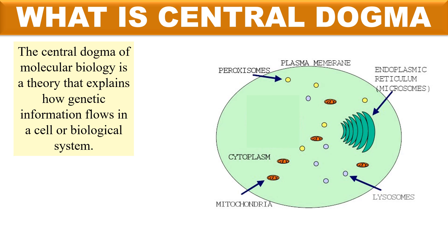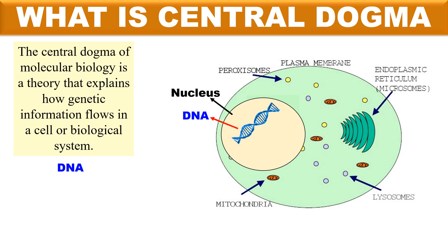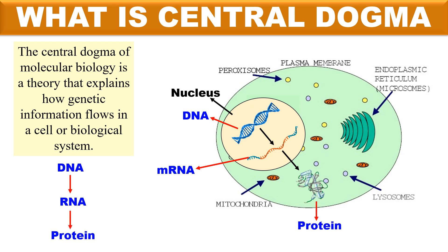Here, this is a typical cell and this portion is the nucleus where the DNA is present. According to central dogma, the information will flow from DNA to RNA — meaning the DNA molecule will be converted into the RNA molecule to carry the information. So the information moves from DNA to RNA, and then from RNA the information moves to proteins.